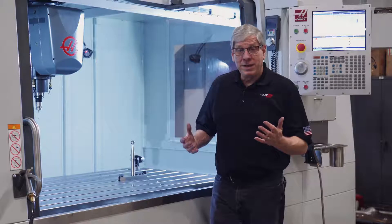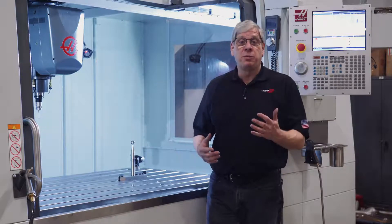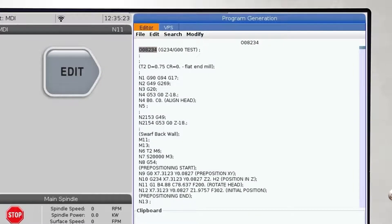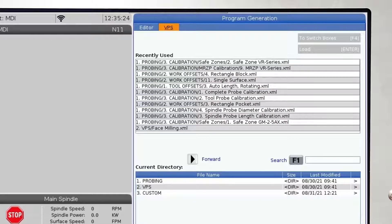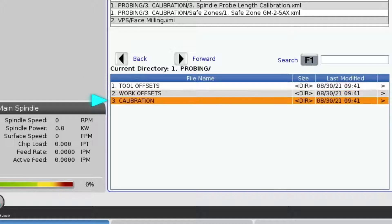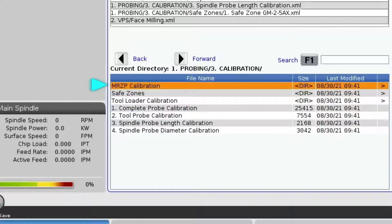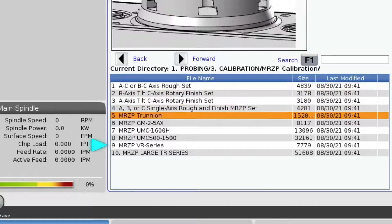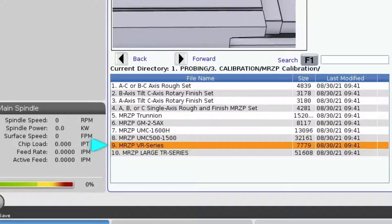I've got the tooling ball attached to the table and I'm ready to proceed. You get to the VPS template by pressing the Edit key and navigating to the VPS tab. Scroll down and highlight number one, Probing, and press the right arrow key. Now scroll to number three, Calibration, and again press the right arrow key to enter that directory. Highlight MRZP Calibration and hit that right arrow key. Now scroll down to number nine, MRZP VR series.